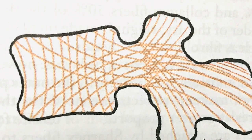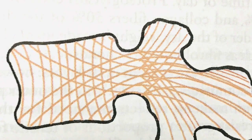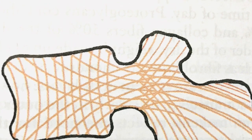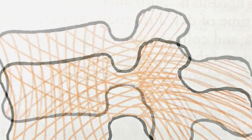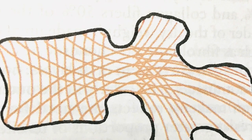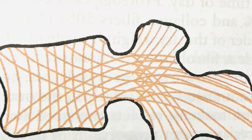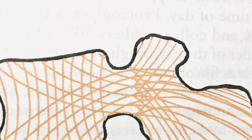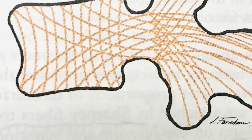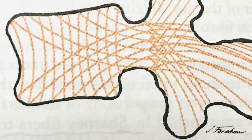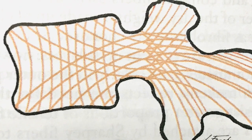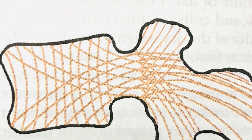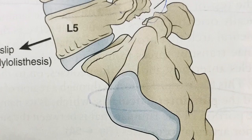The vertebral column has a well-developed trabecular system to bear compressive and tensile loads. It consists of a mixture of cancellous and cortical bone. There is an inner layer of specialized trabecular system in weight-bearing areas, with vertically oriented trabeculae in the body and fan-shaped trabeculae in areas like the lamina, adding to the compressive load-bearing strength.